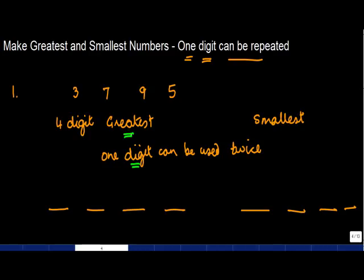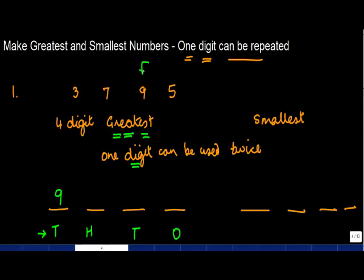Let's first talk about the greatest number. This is the ones place, tens, hundreds, and thousands. When making the greatest number, the highest digit should come first because the value on the left side is the greatest. The highest among these four digits is nine. Now, you are given the freedom to use one digit twice — so which digit would you use twice to make the greatest number?